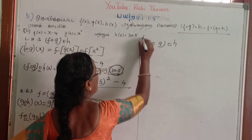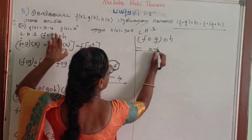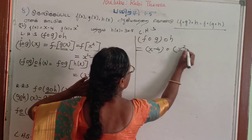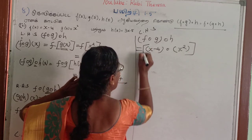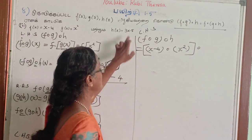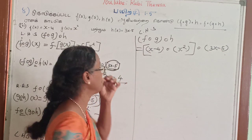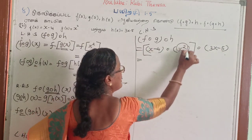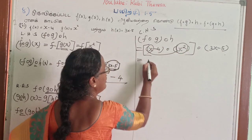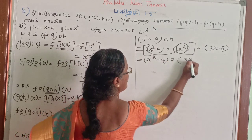F of G of H. F is X minus 4. G is X squared. F of G is in a bracket. H of X is 3X minus 5. X squared is substituted, giving X squared minus 4. Then 3X minus 5 in bracket.